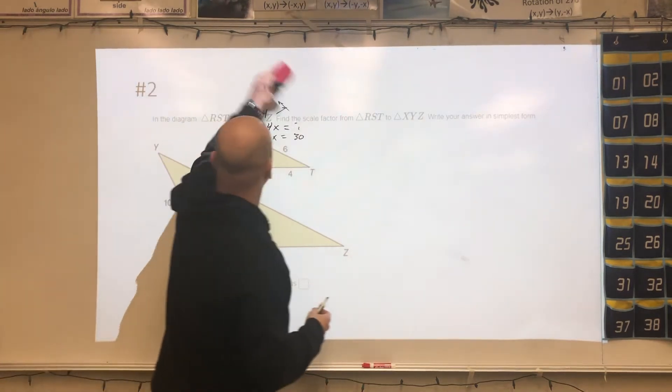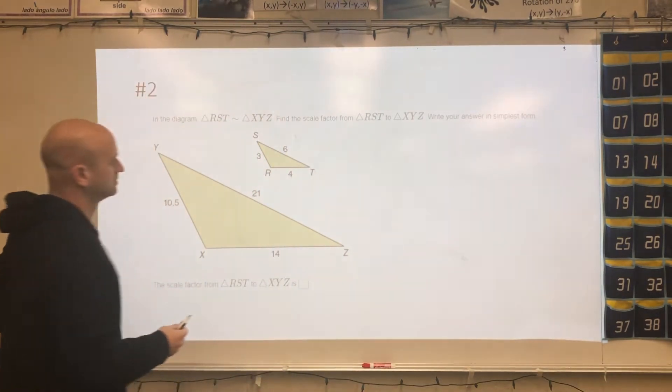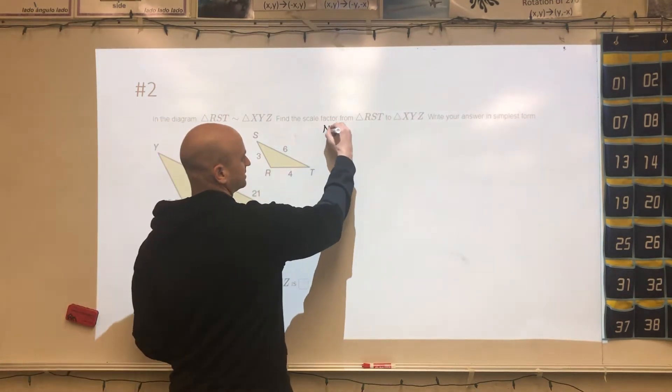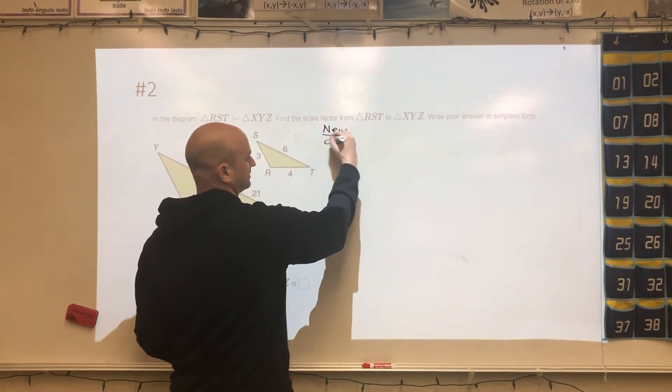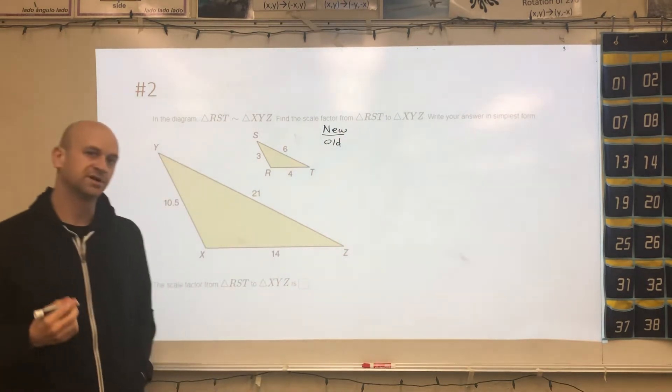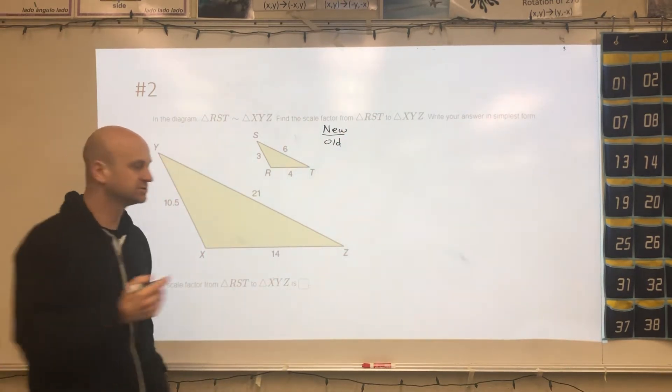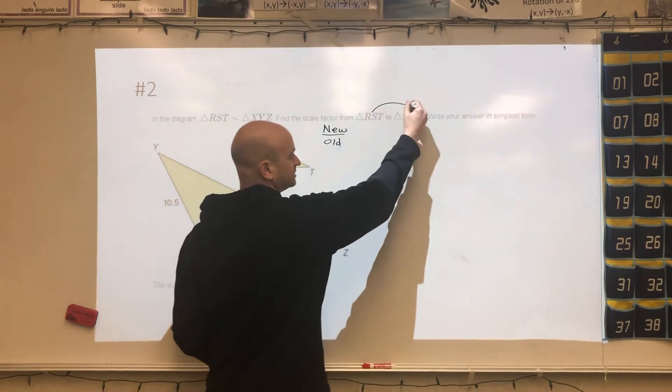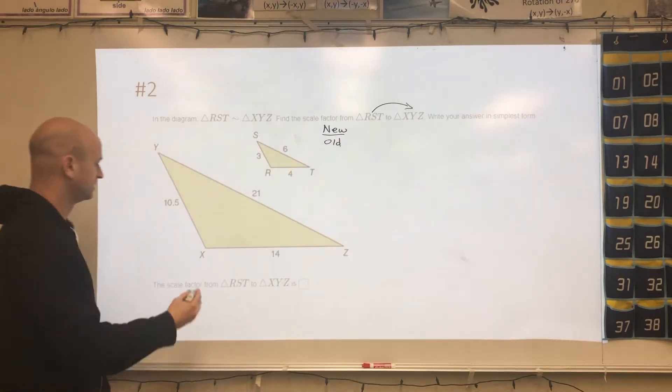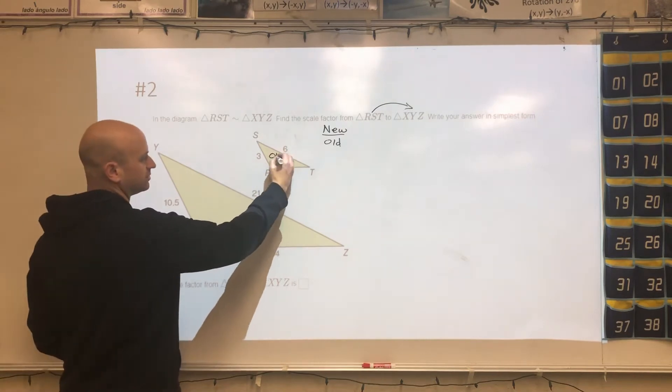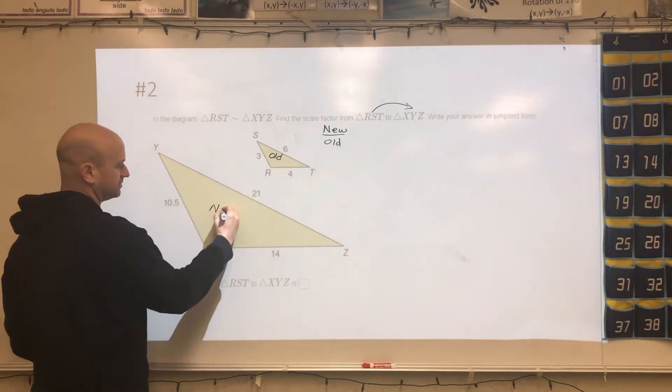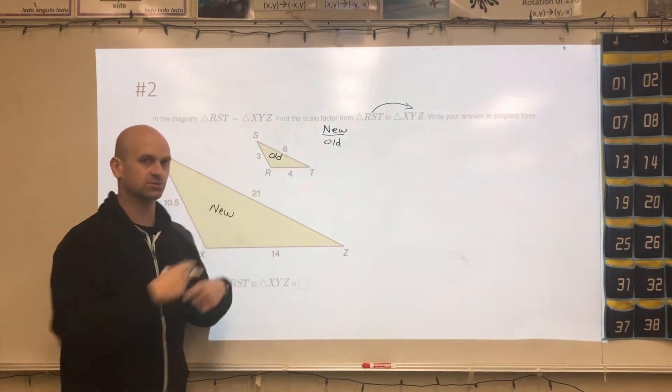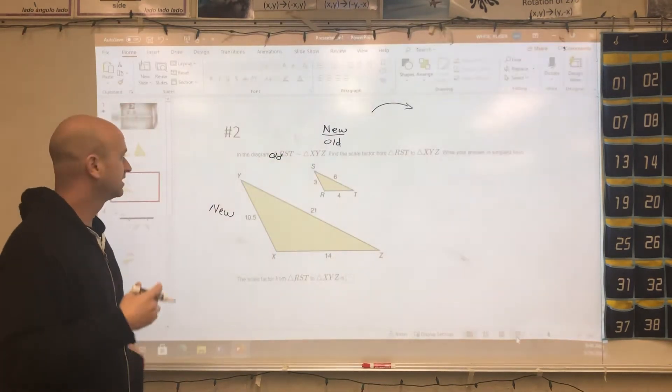All right, the next one, number two. They want you to find the scale factor. So scale factor is new divided by old. Now how do we know which one is new and old in this problem? We're going from RST to XYZ. So RST would be the old, and this would be the new. Those that would have gotten this incorrect probably switched the order.